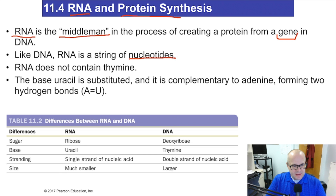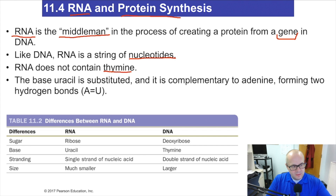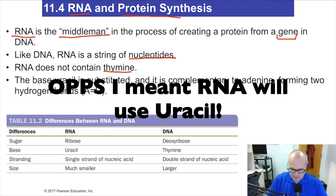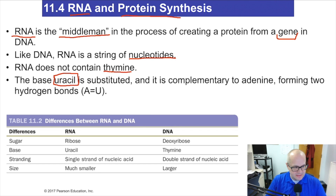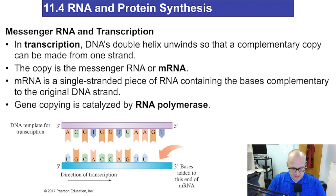RNA does not contain thymine; instead, RNA contains uracil, which makes it a little bit different. It's also different in the sugar — DNA has deoxyribose, while RNA has ribose. So RNA will use uracil where DNA uses thymine; that's another key difference between RNA and DNA.